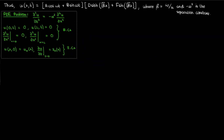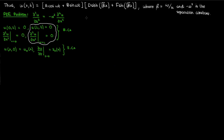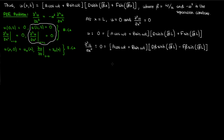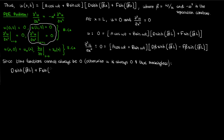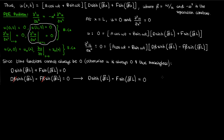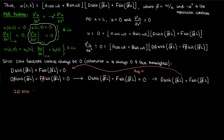Next we apply the boundary conditions at x equals l. At x equals l, both u and its second partial in x are zero. Substituting x equals l into both the u equation and the second partial of u equation, and canceling the beta from the second equation, we rearrange to find that d times the hyperbolic sine term equals f times the regular sine term. Plugging f expressed in terms of d hyperbolic sine into the first equation gives the following expression.